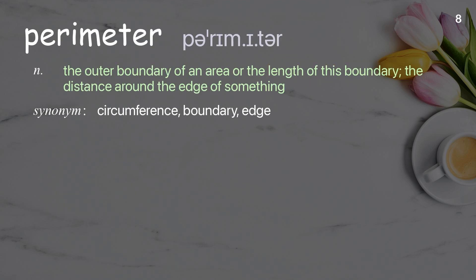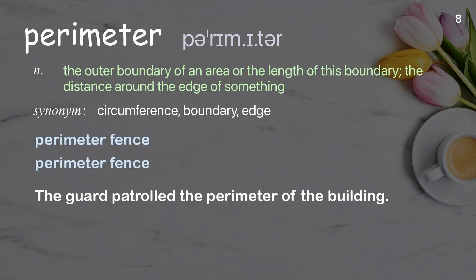Perimeter: The outer boundary of an area, or the length of this boundary; the distance around the edge of something. Examples: Perimeter fence. The guard patrolled the perimeter of the building.